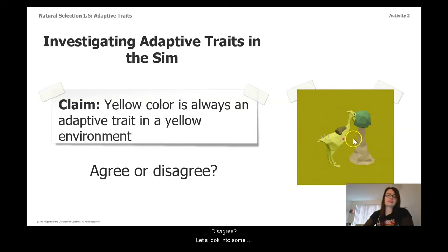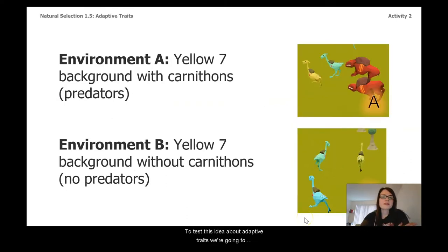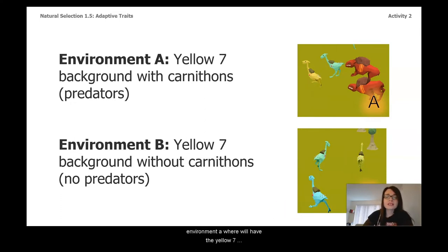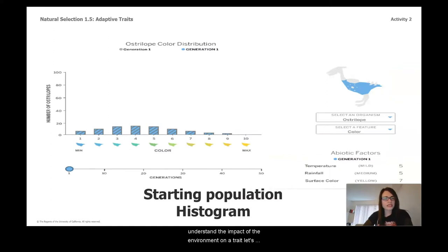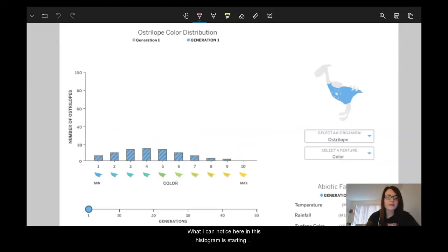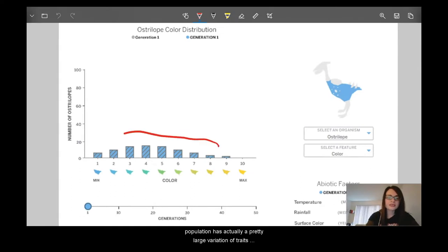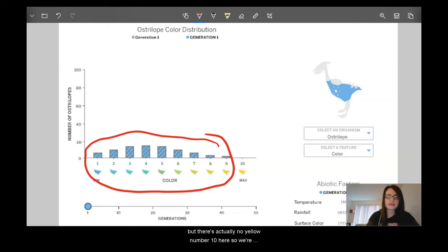Agree or disagree? Let's look into some information and find out. To test this idea about adaptive traits, we're going to take the same population of Ostrilopes and put them into two different situations. Environment A will have the yellow-7 background with predators called Carnathons. Environment B will have the same yellow-7 background but no predators — no Carnathons at all. Let's start by looking at the starting histogram for these populations. The starting population has a pretty large variation of traits, ranging from blue colors to greens and yellows, but there's actually no yellow number 10.